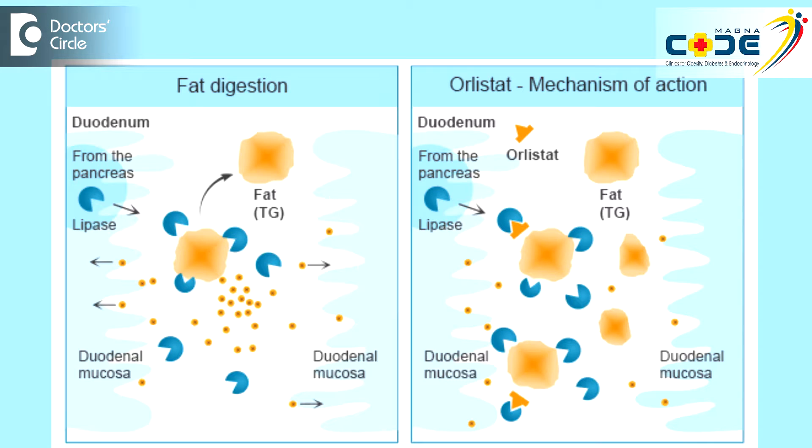Orlistat is a pancreatic lipase inhibitor. It acts by preventing the digestion of the lipid that is present in the food. So if there is excessive fat in your diet,